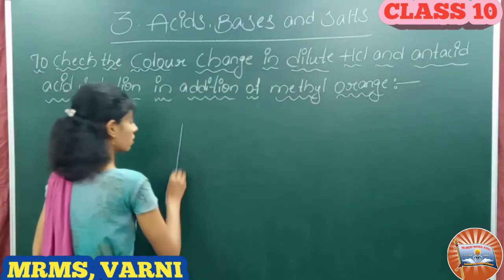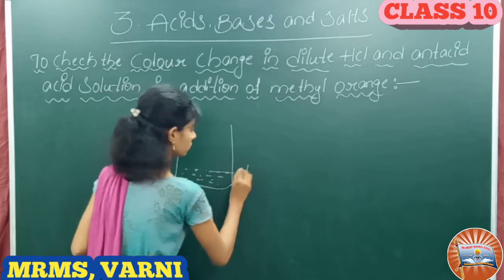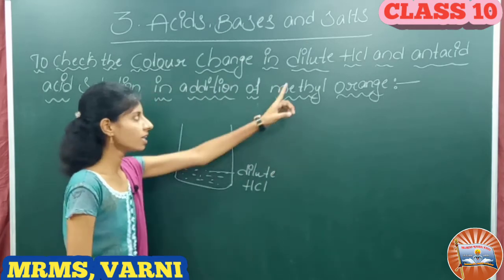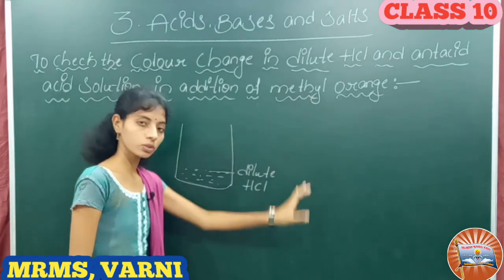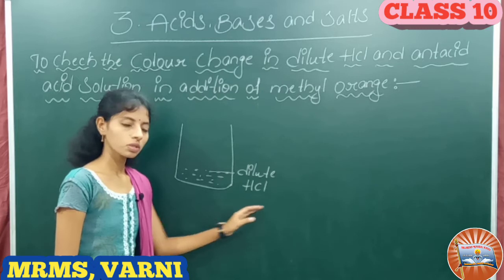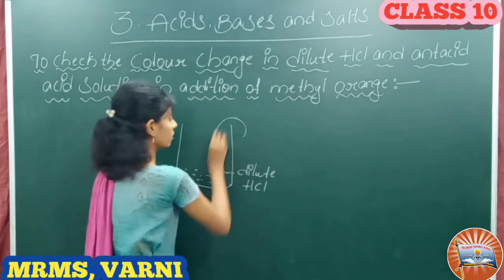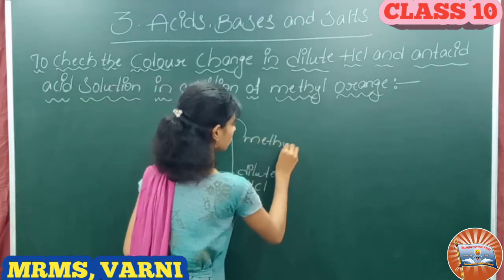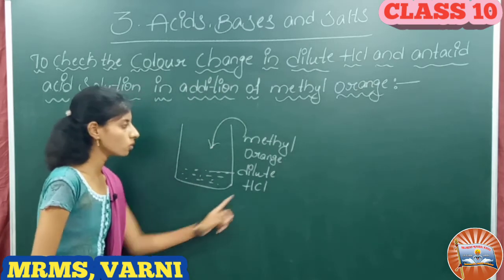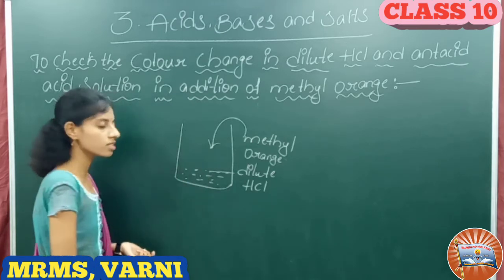For this we need to take a beaker. In this beaker, take dilute HCl. To this diluted HCl, add methyl orange indicator. We know, when we are adding methyl orange to dilute HCl, the color of the solution is turned to red. By adding methyl orange indicator to the diluted HCl solution, the color of the solution turns into red.